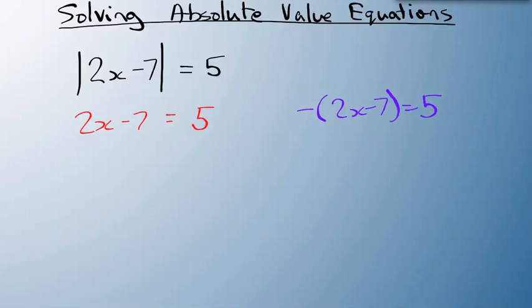And we solve these two equations and end up with two answers. So let's quickly do that. Add 7 to both sides. 2x equals 12, which means x equals 6.